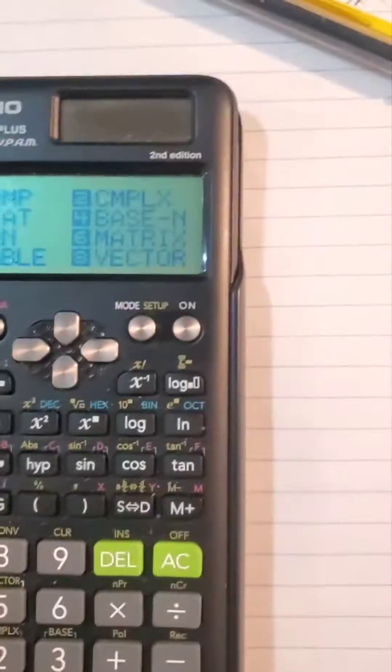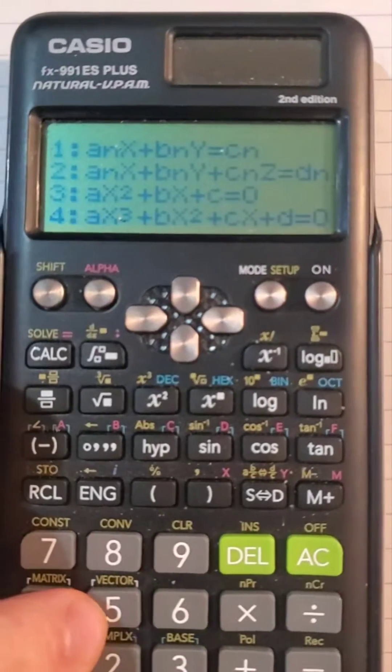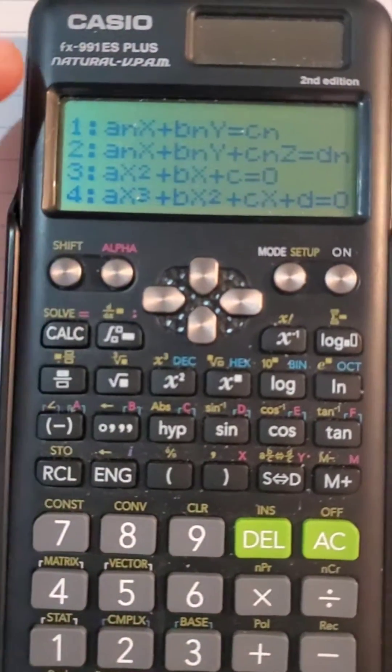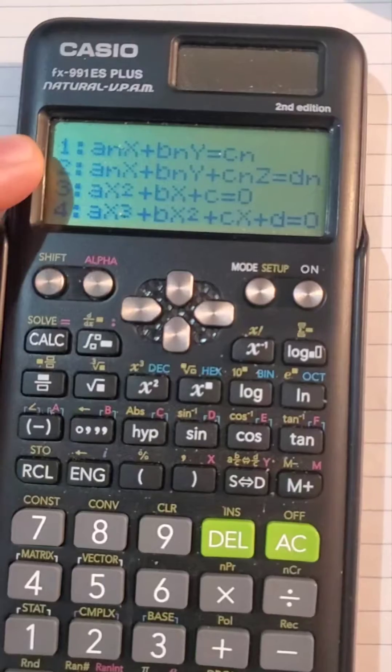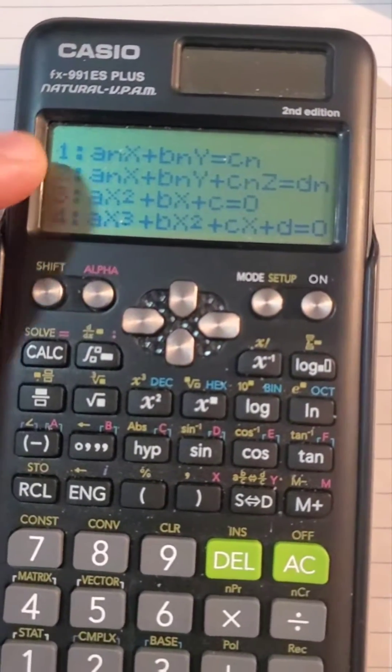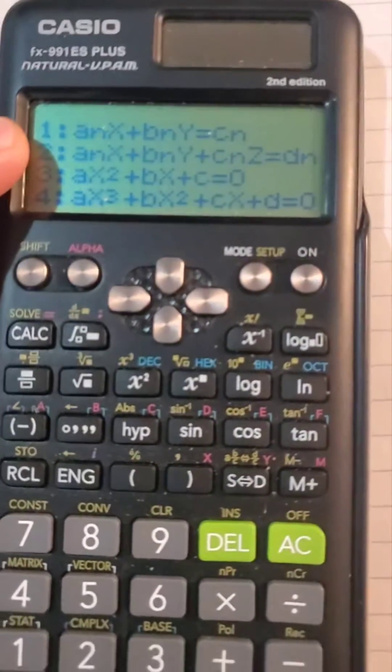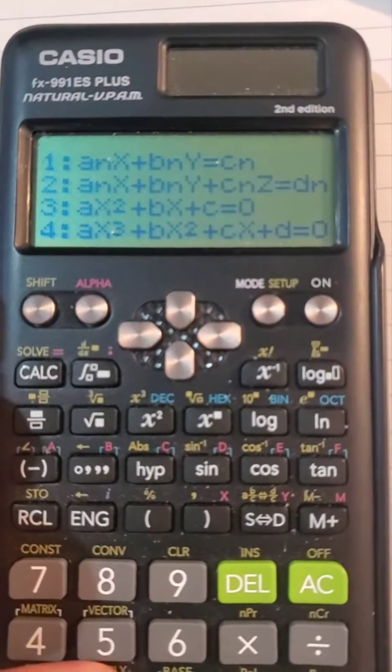First you go to mode, second you go to equation. It's limited to the amount it can do, so we're going to do a 3 by 4 matrix. The matrix is just a series of equations, so we'll do it in that form.